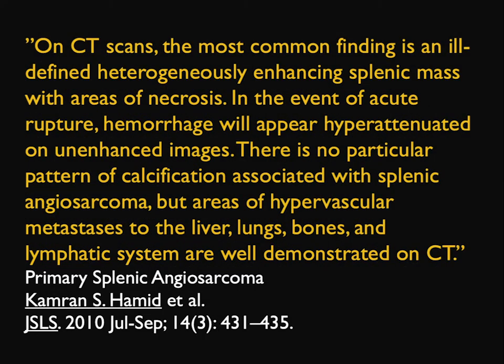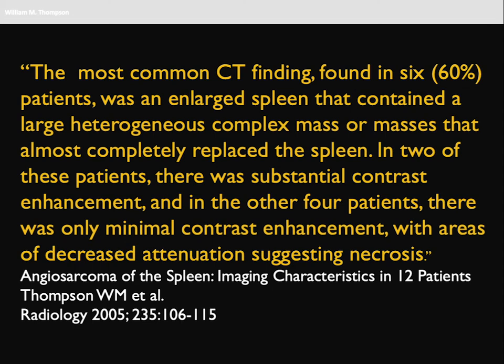In terms of angiosarcomas, there are not many articles. One article describes ill-defined, heterogeneously enhancing splenic mass with areas of necrosis. Acute rupture is possible. Vascular mets to liver, lungs, and bone are all well seen on CT. Another article by Thompson describes six patients with a large spleen with a heterogeneous complex mass replacing the spleen. These are aggressive enhancement, aggressive irregularity, and also early carcinomatosis — you're not making a mistake of calling this a hematoma or hemangioma.